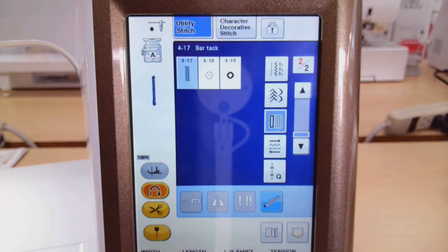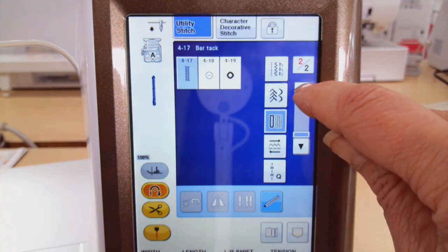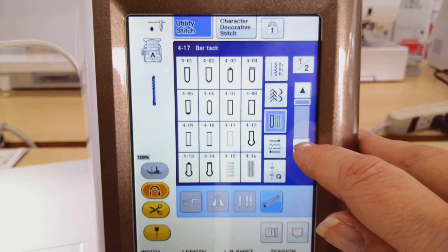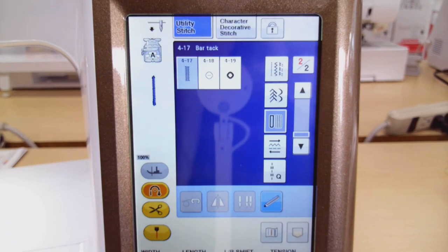So we're going to start here with the Baby Lock Chorus and you can see I'm on my buttonhole tab. If I scroll up you can see these are all the buttonholes. We'll scroll down and here's the Bartak stitch that I've chosen.